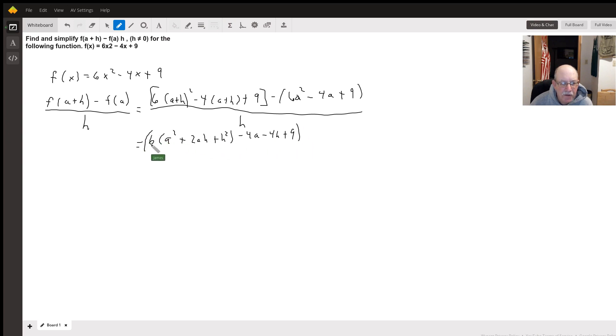So that's this part minus 6a squared minus 4a plus 9, all over h.